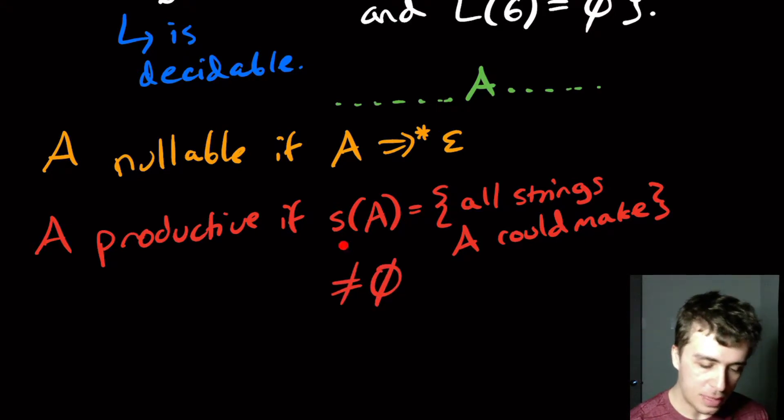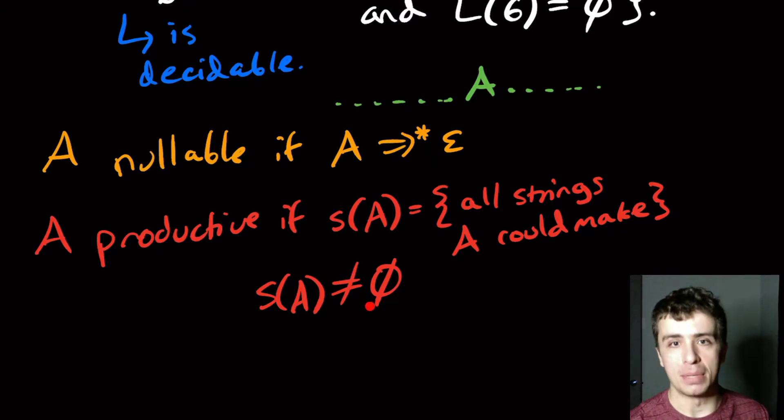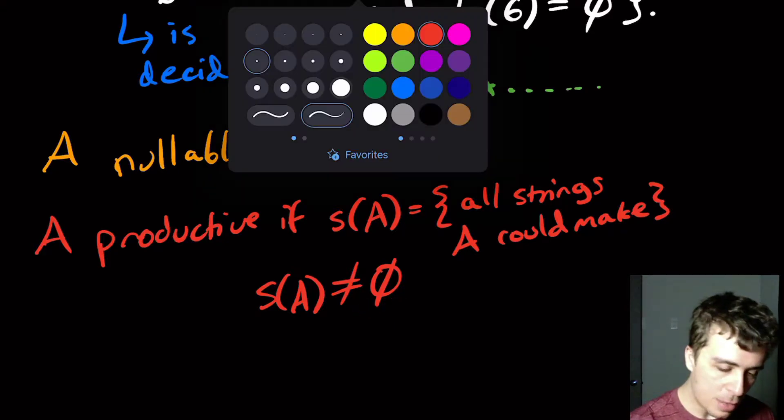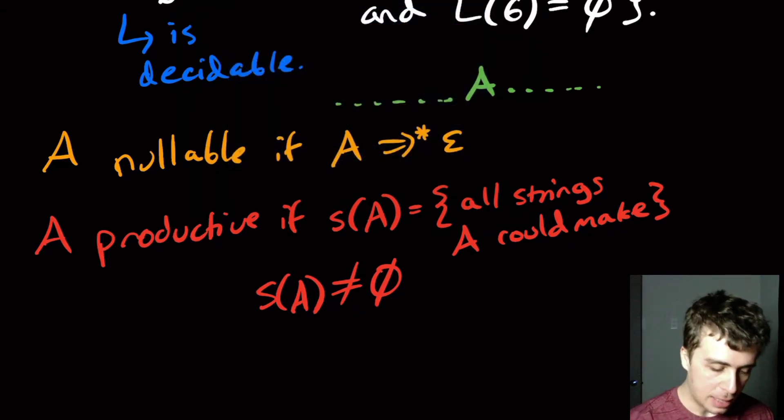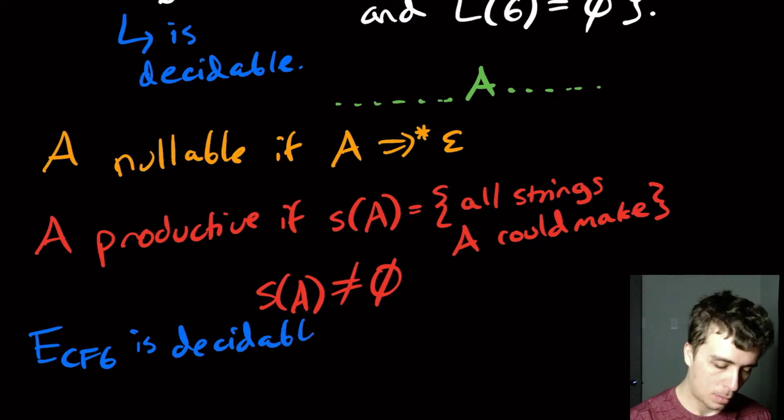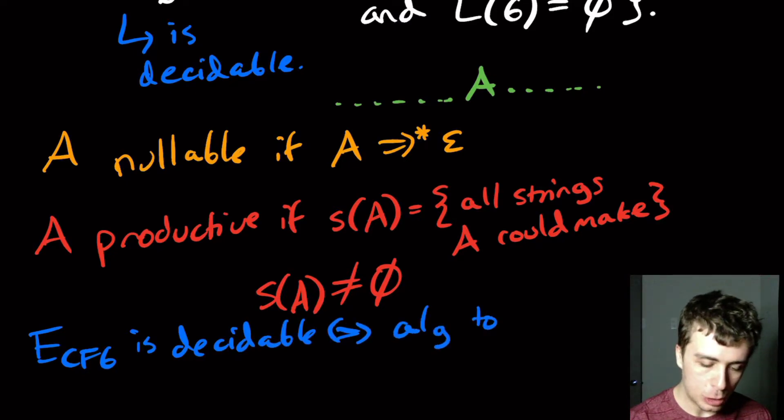Okay, so that's what I'm really interested in. So I'm going to call a variable a productive, if this set right here is non empty. So if this set a right here, s of a is, in fact, non empty.